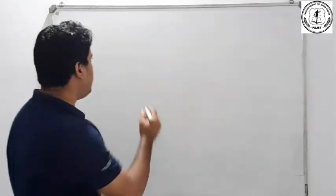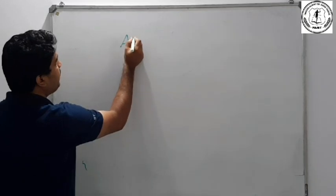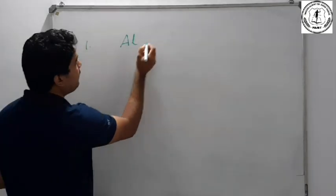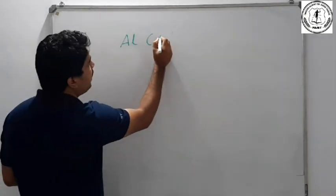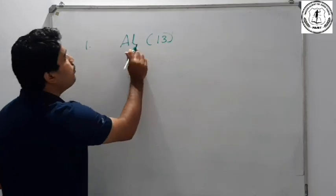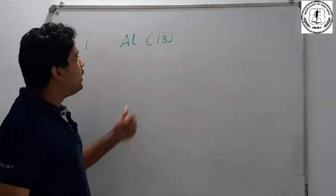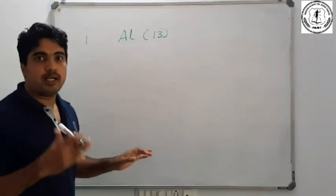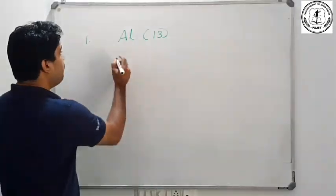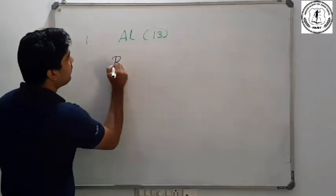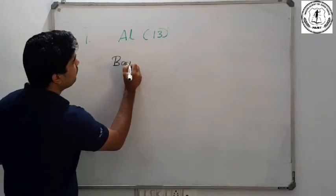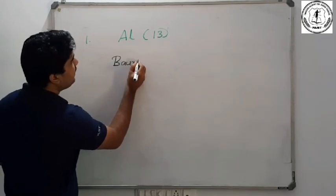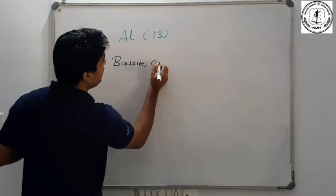Aluminium. Aluminium has the symbol Al and its atomic number is 13. Its ores include bauxite — one — and cryolite — two.